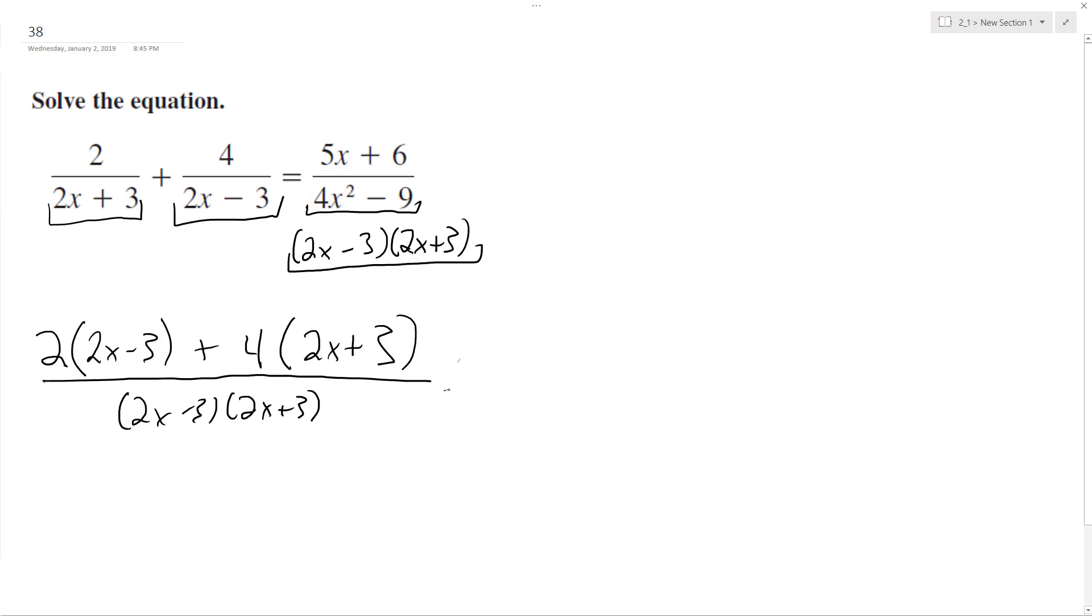Okay, so the right side of the equation is already set up. So it's just 5x plus 6 over 2x minus 3, 2x plus 3. And since they have the same denominators, we can just cancel those out.